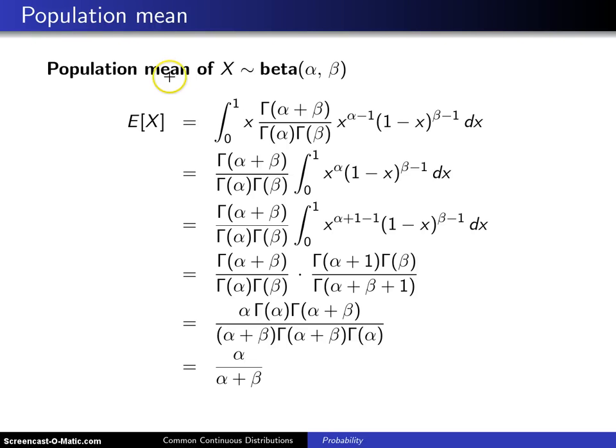Here's a derivation of the population mean of a random variable x that has the beta distribution with parameters alpha and beta. Mu is the expected value of x. Because this is a continuous random variable, that will be the integral over the support which runs from 0 to 1